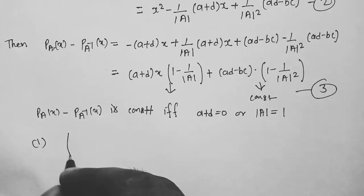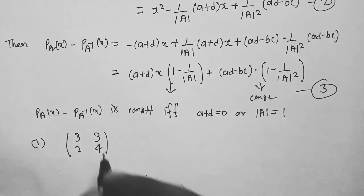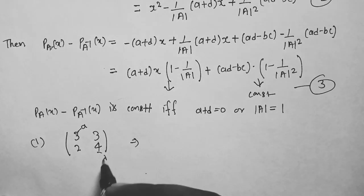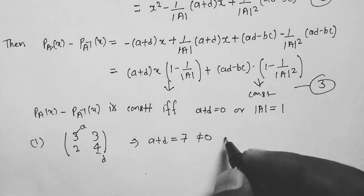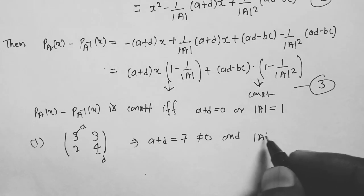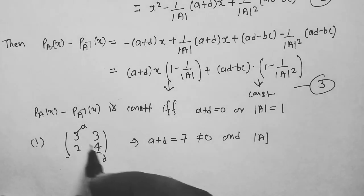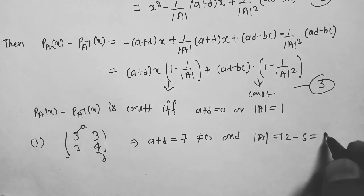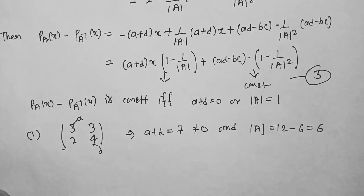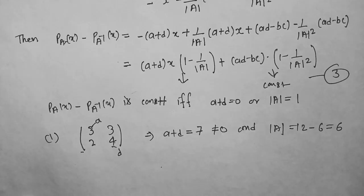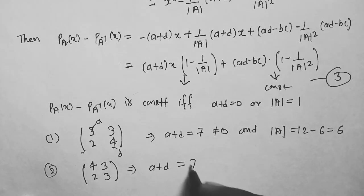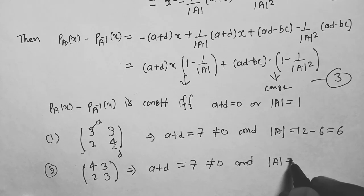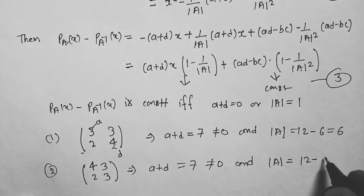For the first option, matrix [[3,2],[3,4]]: A plus D equals 3 plus 4 equals 7, not equal to 0, and determinant equals 12 minus 6 equals 6, not equal to 1. So option 1 is wrong. For the second option, matrix [[4,3],[2,3]]: A plus D equals 7, not equal to 0, and determinant equals 12 minus 6 equals 6. So option 2 is also wrong.